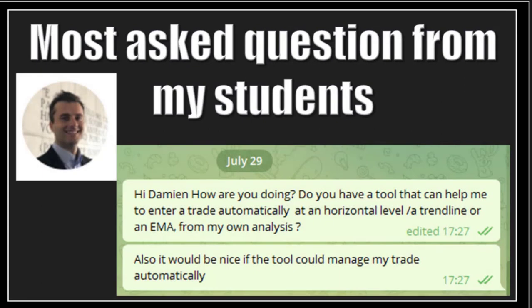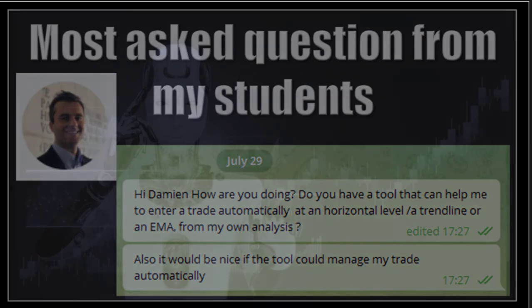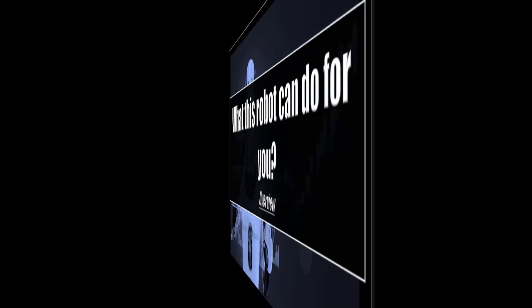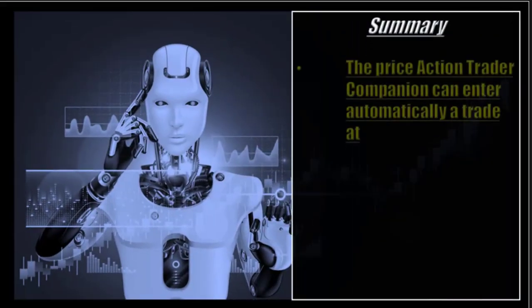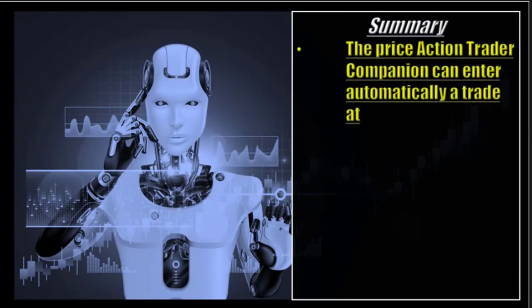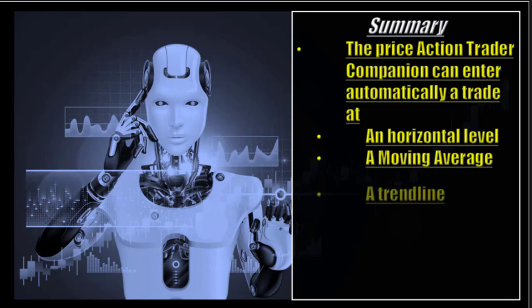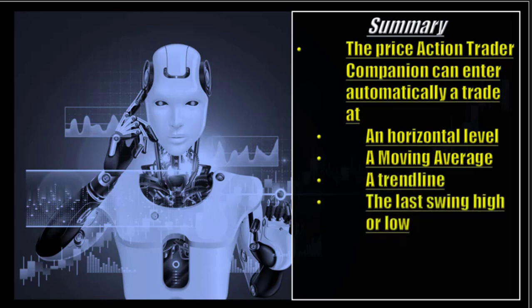Most of my members ask me: do you have a tool that can help me to enter a trade automatically at a horizontal level, a trend line, or an EMA from my own analysis? The Price Action Trader Companion can enter automatically a trade at a horizontal level, a moving average, a trend line, the last swing high or low, or at the envelope.